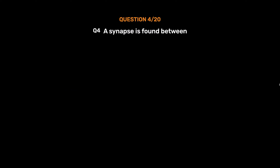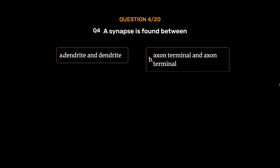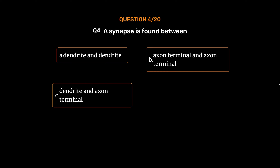Question number 4. A synapse is found between: Option A: Dendrite and dendrite. Option B: Axon terminal and axon terminal. Option C: Dendrite and axon terminal. Option D: All of the above. The correct answer is Option C: Dendrite and axon terminal.